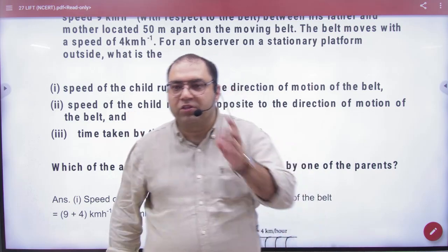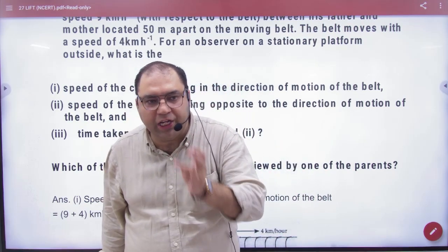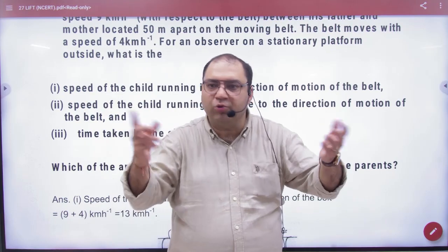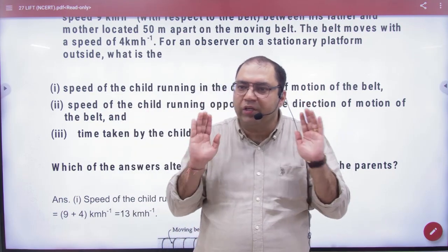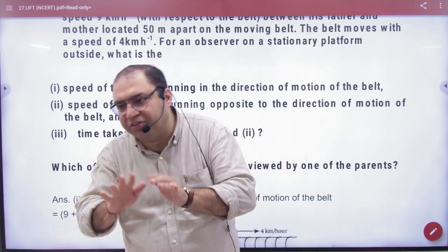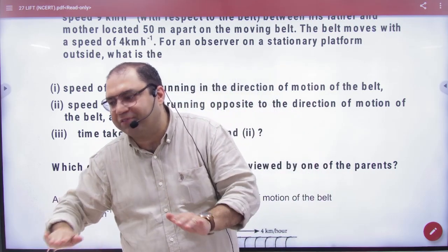When they are on the belt - the mother, father, and child - if they did not see the world, then the relative motion is zero. According to one another, they are at rest.